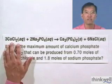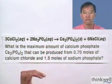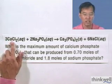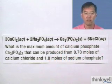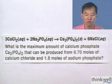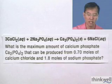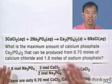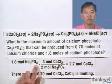Now let's take this exact same machinery and turn it into a chemistry problem. We've got calcium chloride reacting with sodium phosphate to form calcium phosphate and sodium chloride. This is a balanced reaction: 3 moles of calcium chloride and 2 moles of sodium phosphate react to form 1 mole of calcium phosphate and 6 moles of sodium chloride. The question asks: what is the maximum amount of calcium phosphate that can be produced from 0.7 moles of calcium chloride and 1.8 moles of sodium phosphate? Method 1 says we guess that one of them is the limiting reagent, so let's guess that sodium phosphate is the limiting reagent — totally arbitrary.